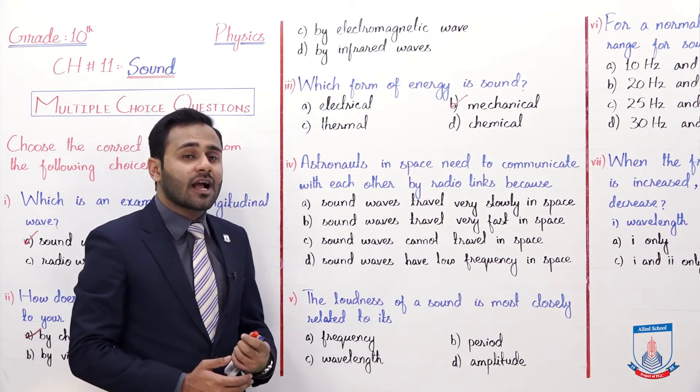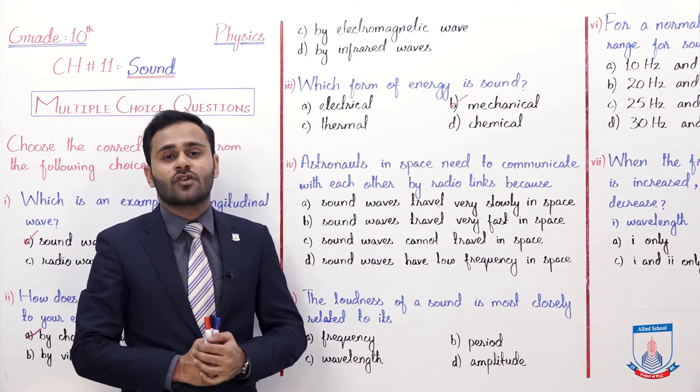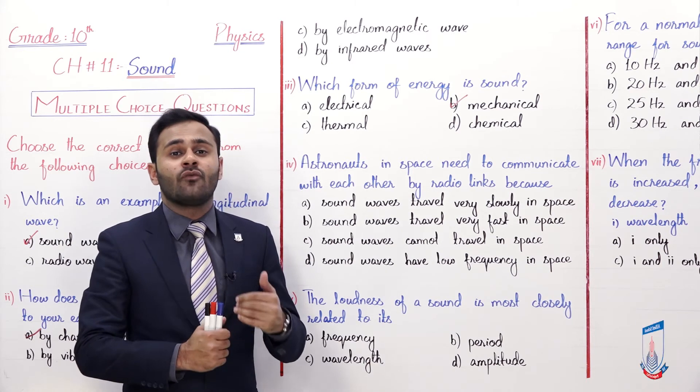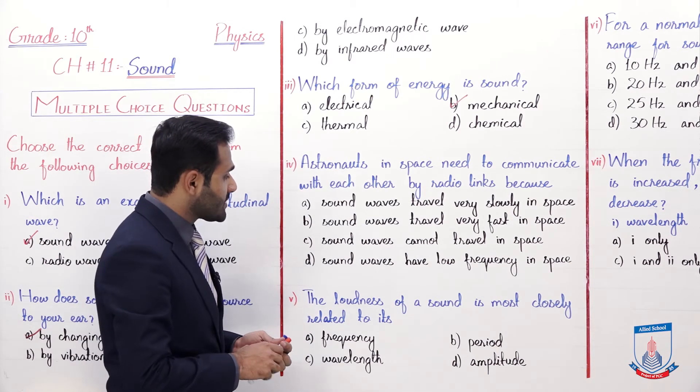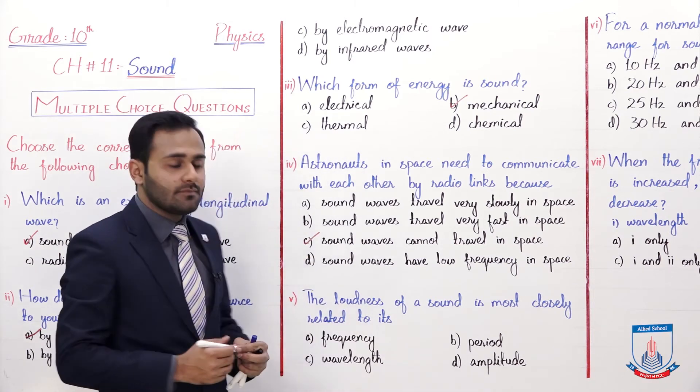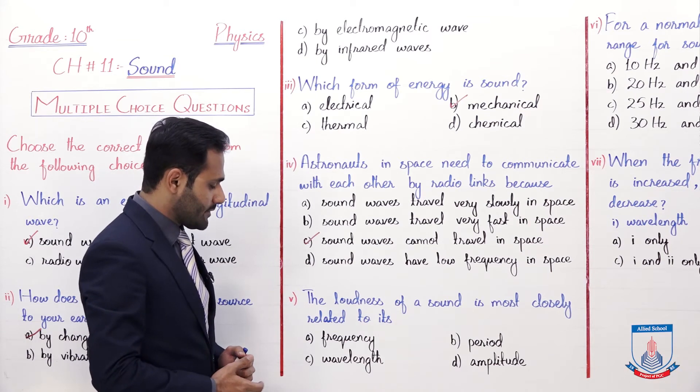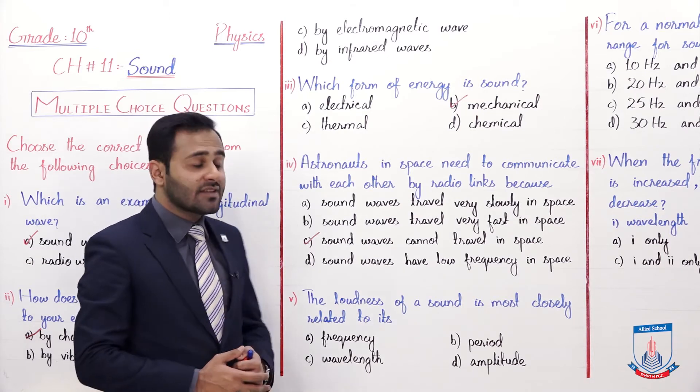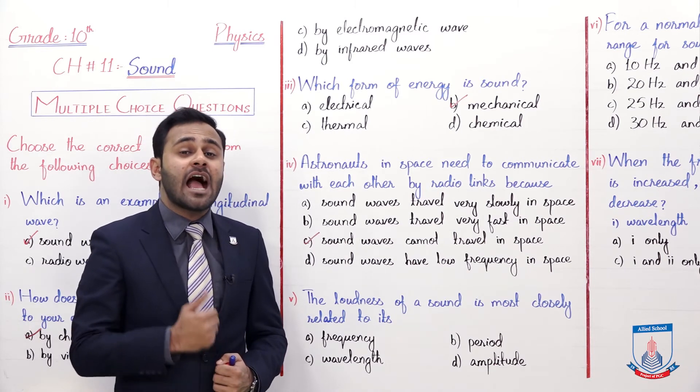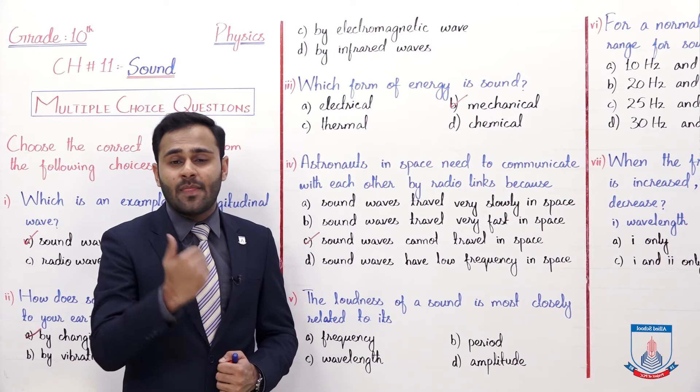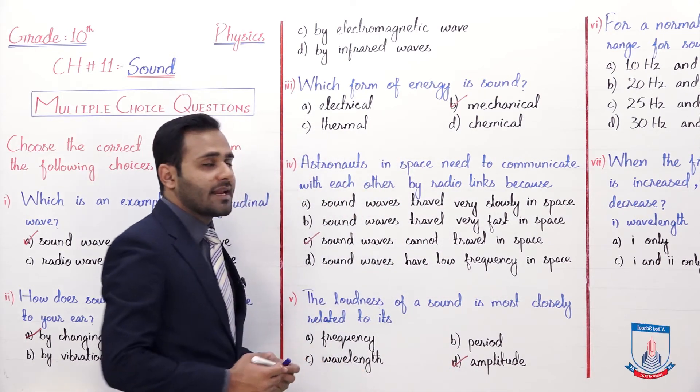So astronauts have to communicate in space using radio links just because of this that in space sound waves cannot travel. Sound waves require a medium to travel. So the option C is correct, sound waves cannot travel in space. The fifth MCQ, the loudness of a sound is more closely related to its A frequency, B period, C wavelength and D amplitude. So loudness is most closely related to amplitude. So option D is correct and the next MCQ.